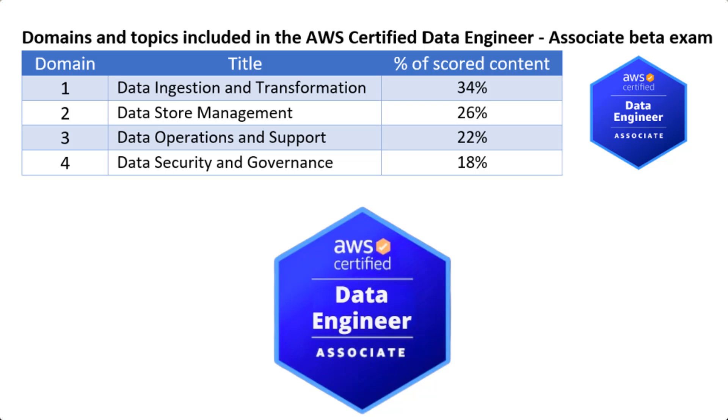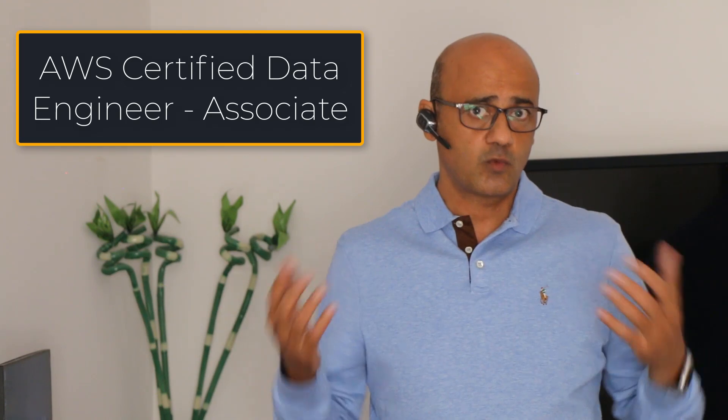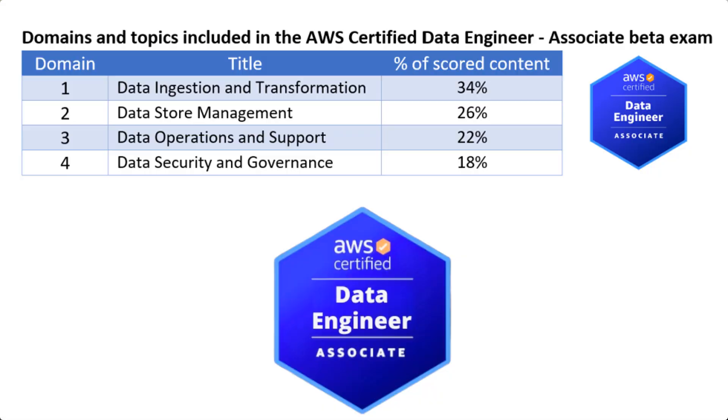Domain 3 is Data Operations and Support, which is about 22% of the content. In this domain I'll be covering orchestrating data pipelines using Amazon MWAA, Step Functions, and Lambda, troubleshooting and managing workflows, calling SDKs and other Amazon services through code to process data using Amazon EMR, Amazon Redshift, AWS Glue, and more.